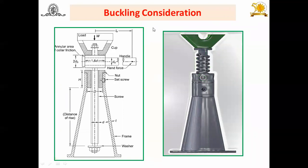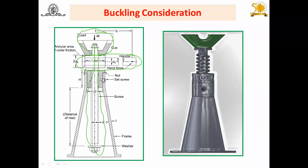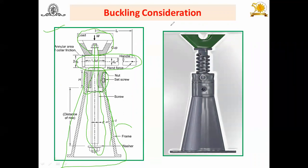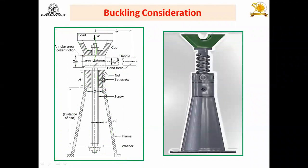While designing the screw jack, you have to determine the dimensions of the cup, the length of the handle or tommy bar, the power screw, the nut, and using empirical relations, the body part dimensions. One important concept we are going to discuss is buckling consideration, because that must be taken into account while designing the screw jack.